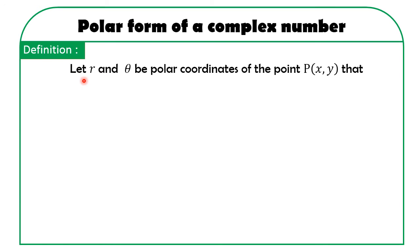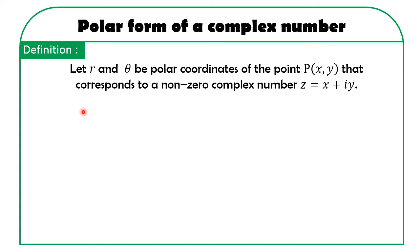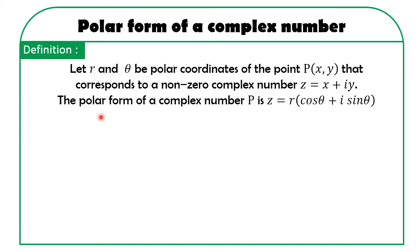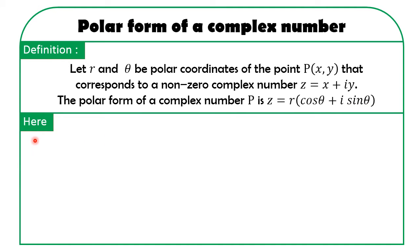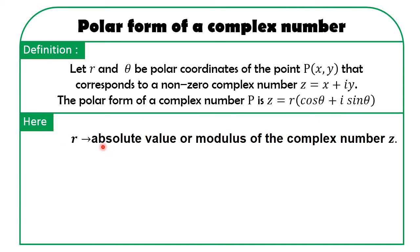The definition: let R and theta be the polar coordinates of the point P of (x, y), which corresponds to a non-zero complex number z = x + iy. The polar form of a complex number z is equal to R(cos θ + i sin θ). Here R is called the absolute value or modulus of the complex number z, that is R = |z|.